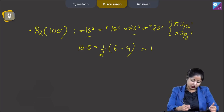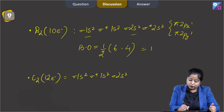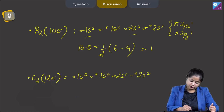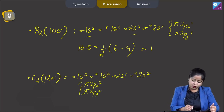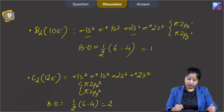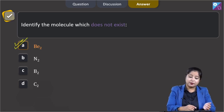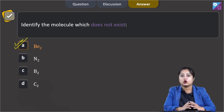For C2 with 12 electrons: σ1s², σ*1s², σ2s², σ*2s², π2px², π2py². Bond order = ½(8 − 4) = 2. Among the given options, the only molecule for which the bond order is 0 is Be2, so Be2 will not exist. The correct answer is option A.